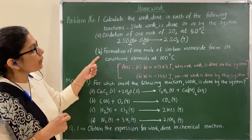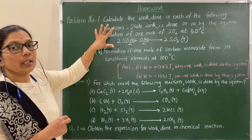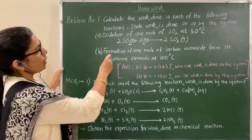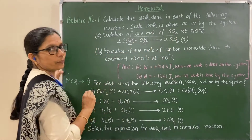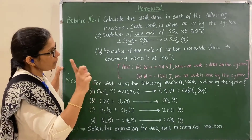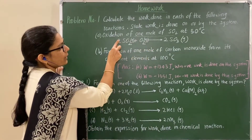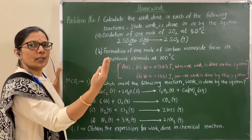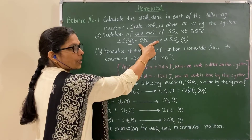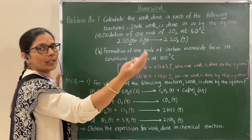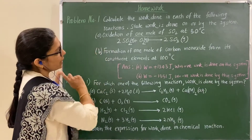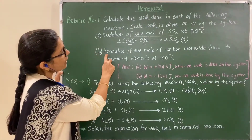In the previous session I gave homework based on work done in chemical reaction. For the oxidation of one mole SO2, two alternative methods are available. First method: convert the reaction to one mole by dividing by two, then find delta n and find work W. The other way is to find delta n of the two-mole reaction, find work, and then divide by two to get the work for one mole.